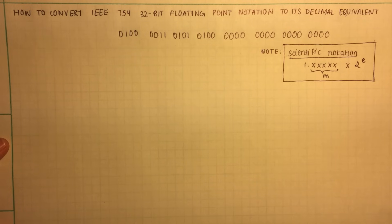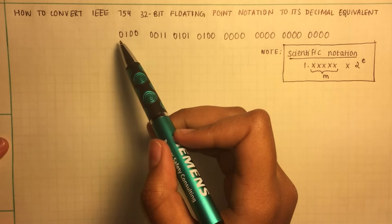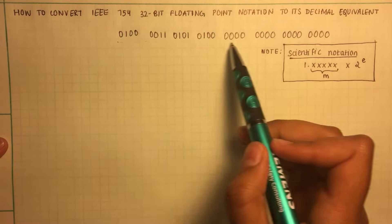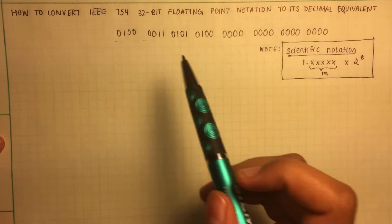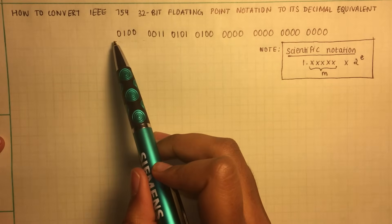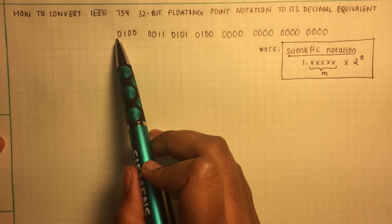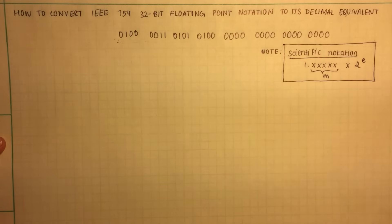Howdy, my name is Abhishalini and I'm here to explain how to convert IEEE 754 32-bit floating point notation to its decimal equivalent. So this is the example that I'm going to consider. This is the 32-bit floating point notation in IEEE 754 format and let's convert this to its decimal equivalent.